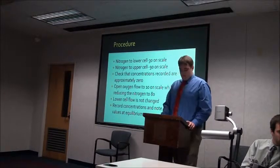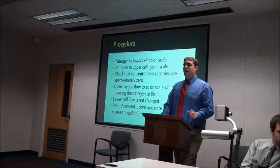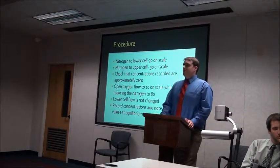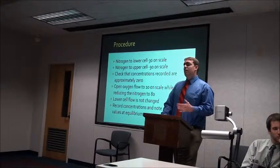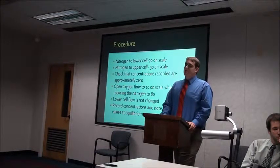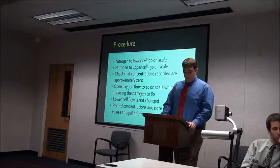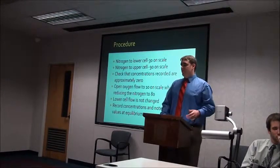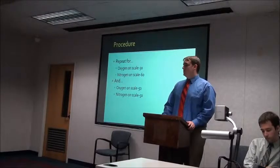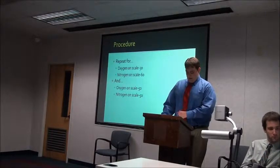For our procedure, we first started with a 30 on-scale nitrogen on the bottom and 90 on-scale nitrogen on the top as our flow readings. We had to check that the concentrations were approximately zero for oxygen coming from the top and bottom cavity. Next we opened oxygen to 10 on-scale on the top while moving nitrogen down to 80, left the bottom constant the whole time, and recorded the concentrations, noting average values at equilibrium. We repeated this for two different concentrations flowing in the top: 30 on-scale oxygen with 60 on-scale nitrogen, and 50-50.